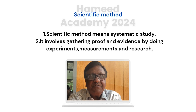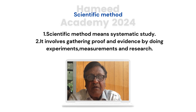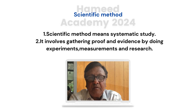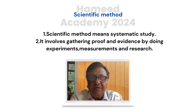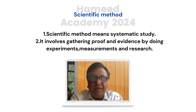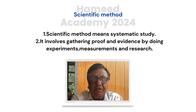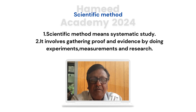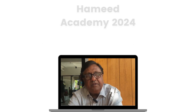In science, we cannot tell anything as we wish or as per our whims and fancy. Whatever we say in science should be proved. Science is incomplete without proof and evidence. So to sum it up, scientific method means systematic study involving gathering proof by experiments, measurements and research on the observations made by us.